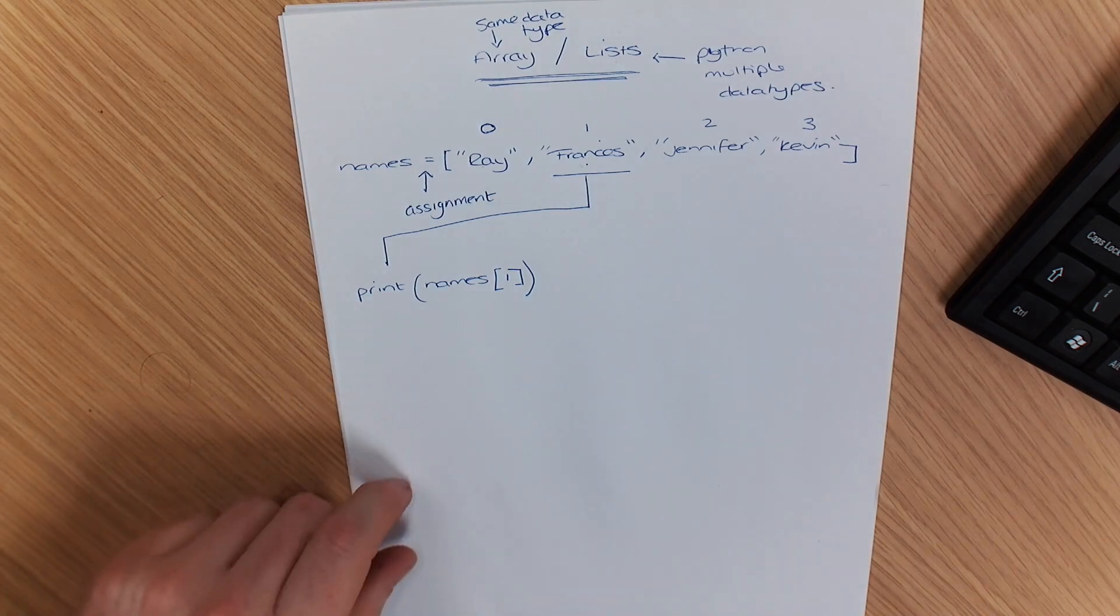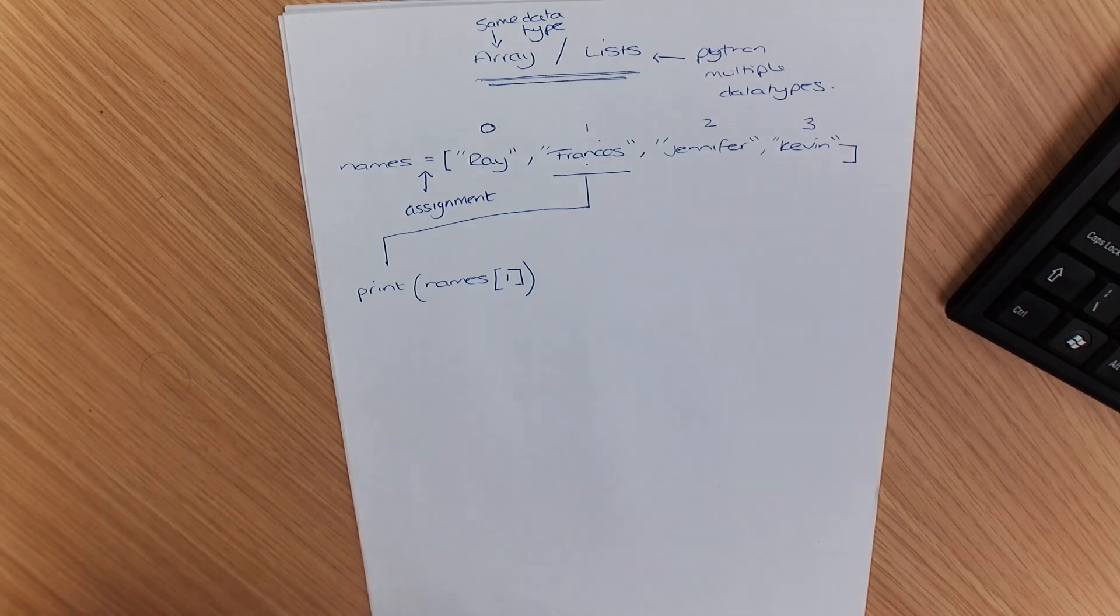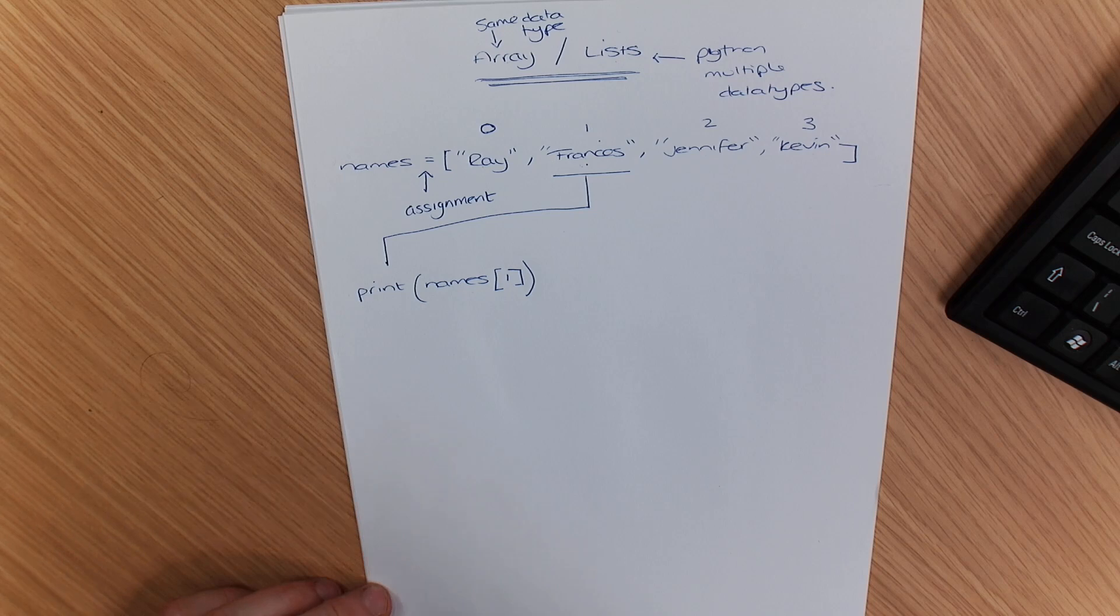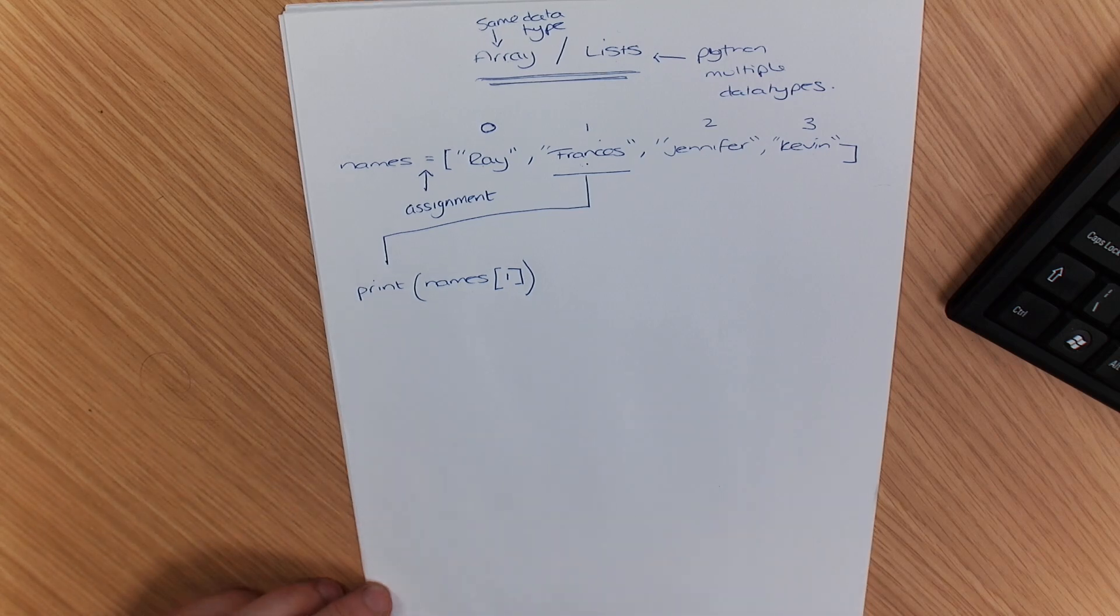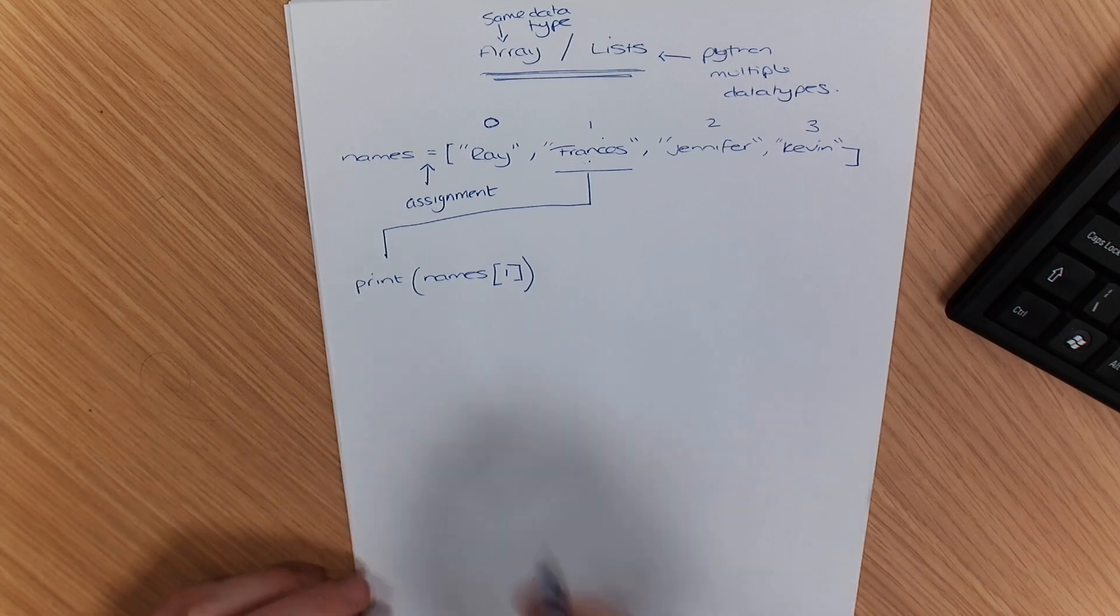Where it starts to get a little bit more complicated is when we have to make it two dimensional. And I know that this is an area where many students struggle. So let me just show you how to iterate through a single list using a for loop and a while loop. So I'm going to show you two ways of doing this.